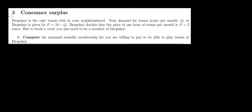Let's have a look at question 3 now with consumer surplus. So we have a tennis club which is the only tennis club in the neighborhood. The demand for tennis hours is given by this price function: price equals 10 minus quantity. Now the price is equal to 2 euros. To book a court we also need to be a member of this club. What is the maximum monthly membership that we are willing to pay for this tennis court?